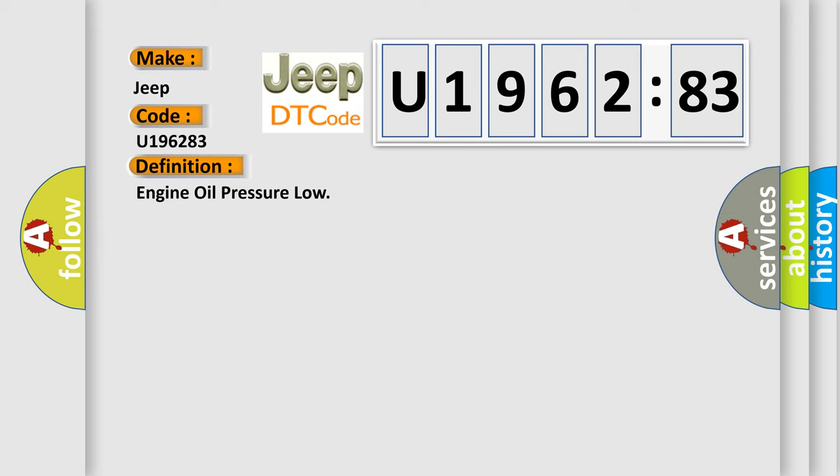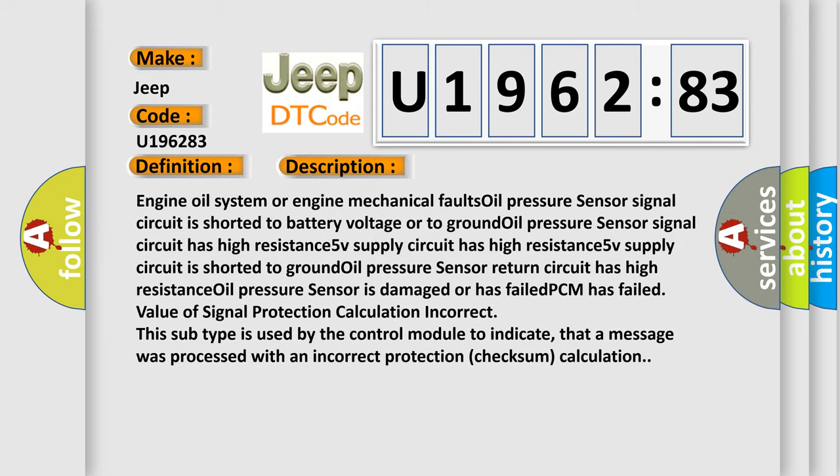Here is a short description of this DTC code. Engine oil system or engine mechanical faults. Oil pressure sensor signal circuit is shorted to battery voltage or to ground. Oil pressure sensor signal circuit has high resistance. 5V supply circuit has high resistance. 5V supply circuit is shorted to ground. Oil pressure sensor return circuit has high resistance. Oil pressure sensor is damaged or has failed. This subtype is used by the control module to indicate that a message was processed with an incorrect protection checksum calculation.